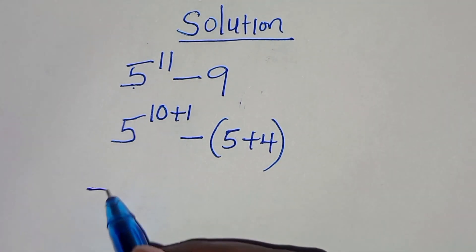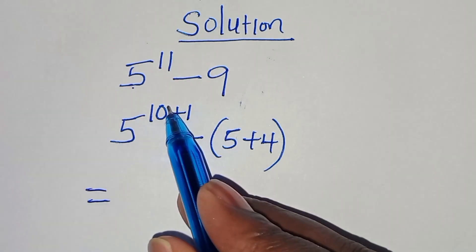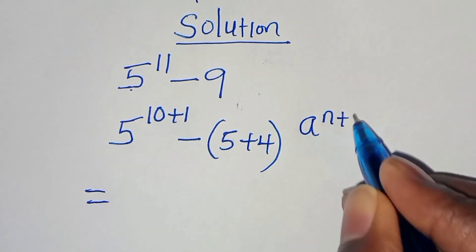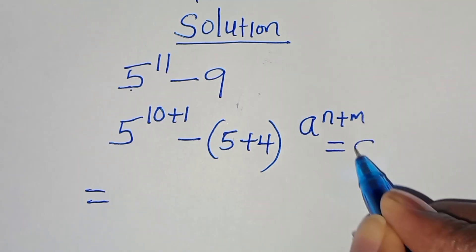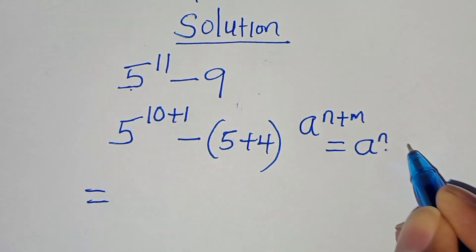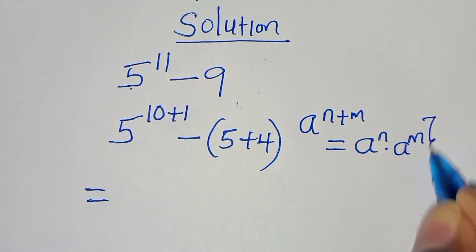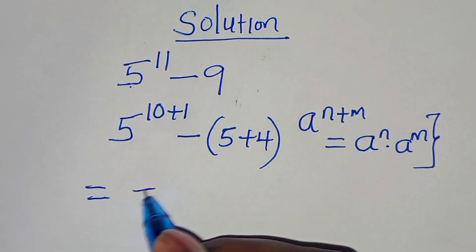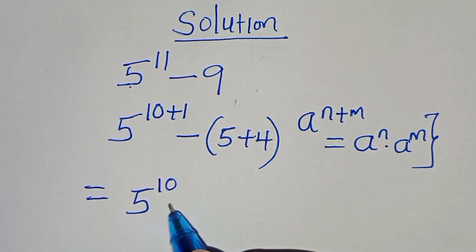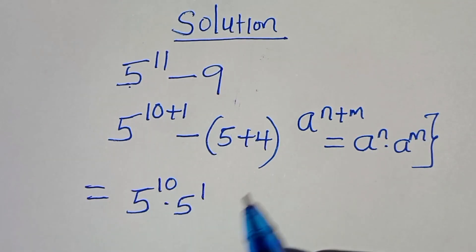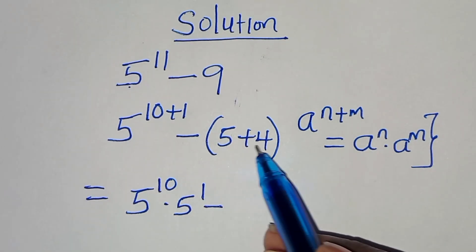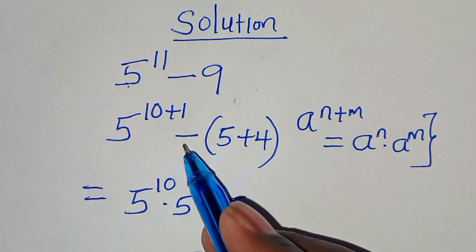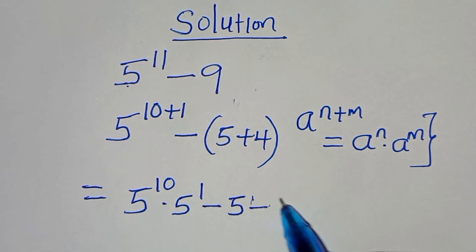This is the same thing as 5 to the power of 10 plus 1. This is in the form of a to the power of n plus m, which can be expressed as a to the power of n times a to the power of m. Applying this exponent property, we have 5 to the power of 10 times 5 to the power of 1, then opening the parentheses: minus 5 times plus 4, which is minus 4.